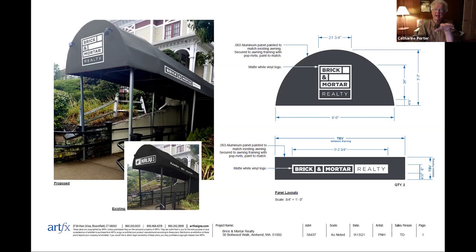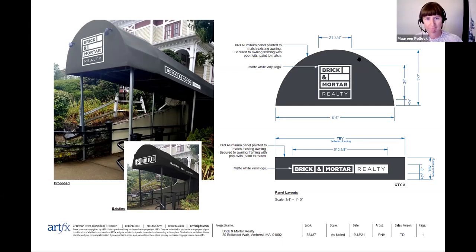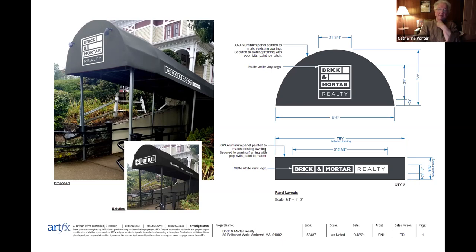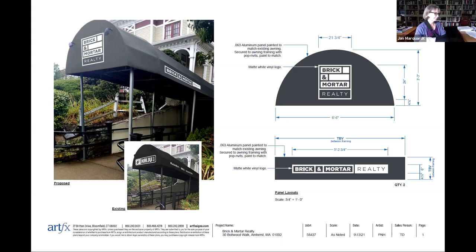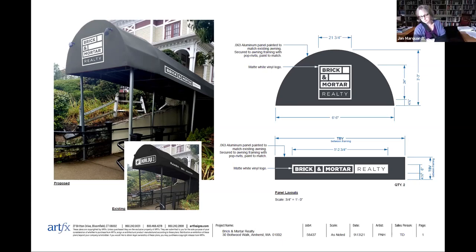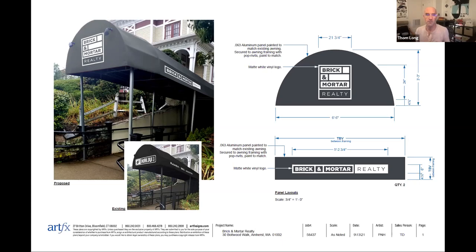The details: it's an aluminum panel painted to match the existing awning, secured to awning framing with pop rivets, painted to match, and has a white vinyl logo — applicable for both the front and side messaging. That looks a little gray. Is he proposing gray as opposed to black? I noticed that myself. Isn't it the same awning with just new text? It is. It's probably either faded or it's the light. Looks fine — looks a little drab, but I don't have a big objection. It gets across the message. I think it's in line with what's there now. It's not bright green or anything crazy. Erica: I think it's nice that it's lit at night.